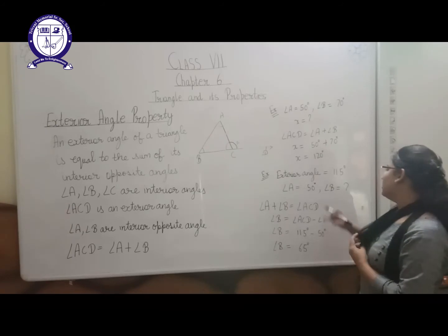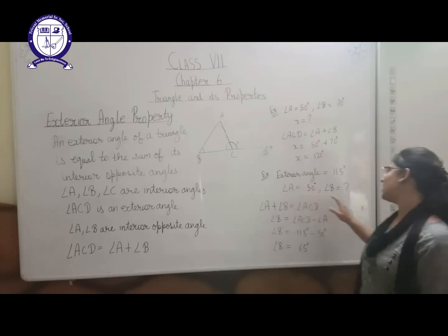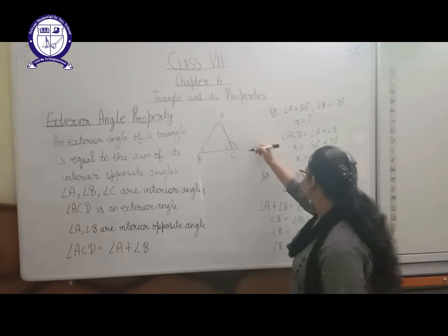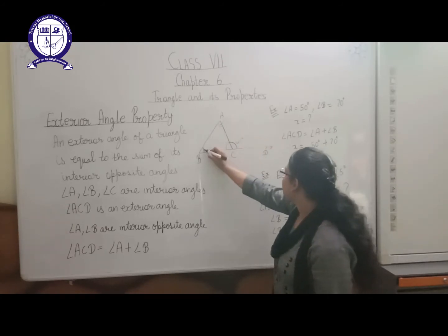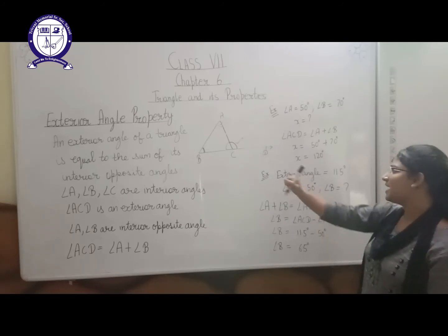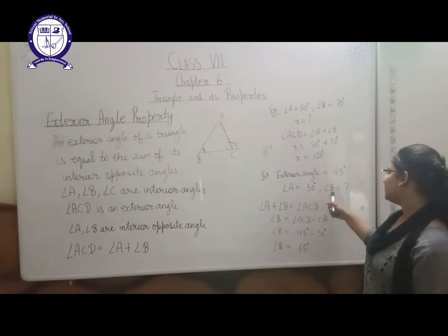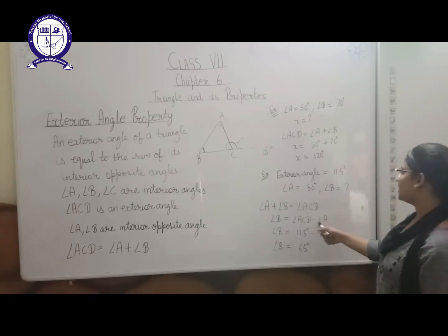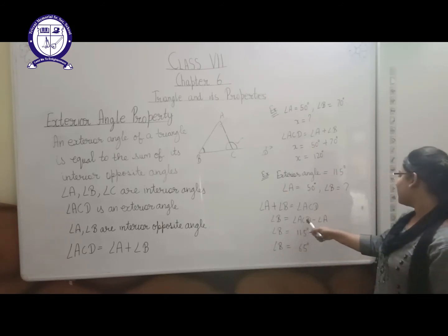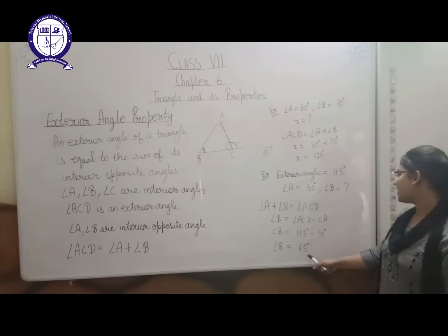Next, suppose the exterior angle ACD is given as 150 degrees and one interior angle A is 50 degrees, and you have to find angle B. We know angle A plus angle B equals ACD by the exterior angle property. So angle B equals ACD minus angle A, which is 150 degrees minus 50 degrees, giving us 65 degrees. So angle B comes out to be 65 degrees.